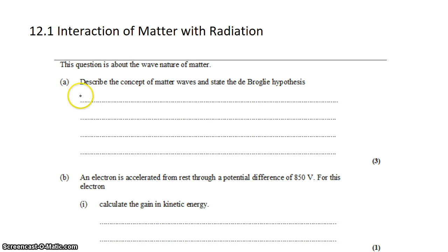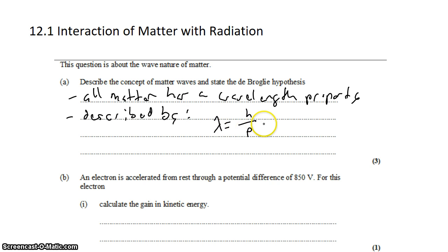The idea of matter waves in the de Broglie hypothesis is that all matter has a wavelength property described by lambda equals h over p. So if there's ever a formula associated with whatever you're meant to describe or define, put that in your answer.